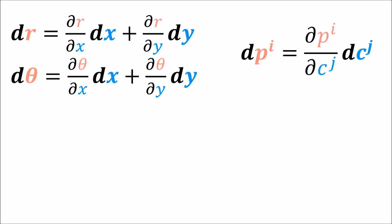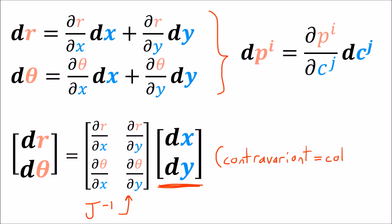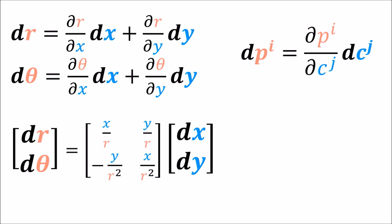We can summarize these two equations using Einstein notation, where c1 and c2 are the Cartesian variables and p1 and p2 are the polar variables. Another way of writing these equations is using matrix notation: we use the inverse Jacobian matrix, and on the right we have a column vector containing the basis co-vectors as entries. We put them in a column vector because contravariant objects always go inside column vectors — we put contravariant things inside column vectors so that the transformation equations work out correctly.